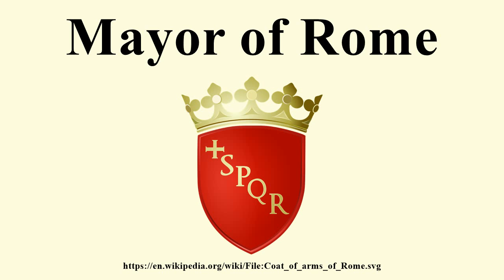As capital of the Papal States, Rome did not receive its mayor until 1870, when it became the capital of the Kingdom of Italy. The new mayor served as member of the City Council and was appointed every three years by the King of Italy.